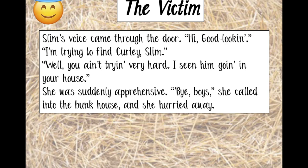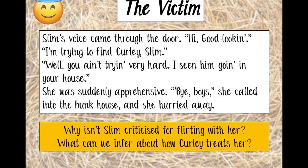We then have a juxtaposition, because while Curly's wife might look at the men a certain way or put her body forward, she doesn't explicitly flirt with them verbally. And yet Slim comes through and his voice comes through the door: 'Hi, good looking.' 'I'm trying to find Curly, Slim.' 'Well, you ain't trying very hard. I seen him going in your house.' She was suddenly apprehensive and hurried away. So Slim is openly flirting with Curly's wife — but is anyone calling him a rat trap, or jailbait? We've got a clear double standard here.